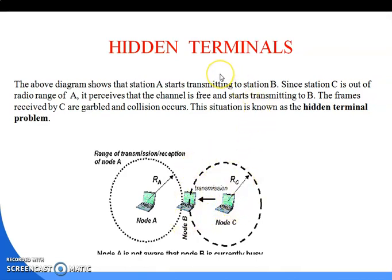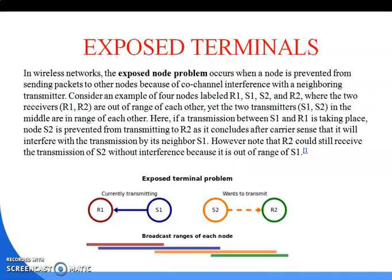The next concept is the exposed terminal problem. In a wireless network, the exposed node problem occurs when a node is prevented from sending packets to other nodes because of co-channel interference with a neighboring transmitter. Consider four nodes: R1, S1, S2, and R2. R1 and R2 are two receivers that are out of range of each other, while the two transmitters S1 and S2 are within range of each other.